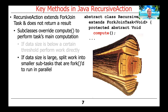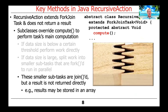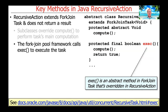You split things up and then let them run in parallel by forking those subtasks. Then you join with all the results of those subtasks, but the result is not returned directly. Instead, it's typically stored in some other data structure, like an array or a linked list, in order to get the final result back to the ultimate caller.